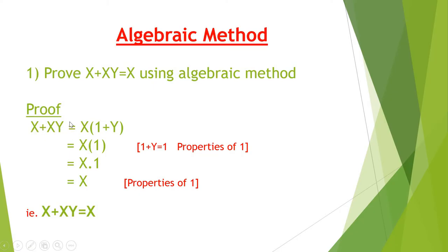In x plus xy, which is the common term? In x, the value 1 exists. In xy, 1 also exists — that is, x into 1 is equal to x, and x into y is equal to xy. So we are taking x as the common factor from this expression: x plus xy equals x into 1 plus y.